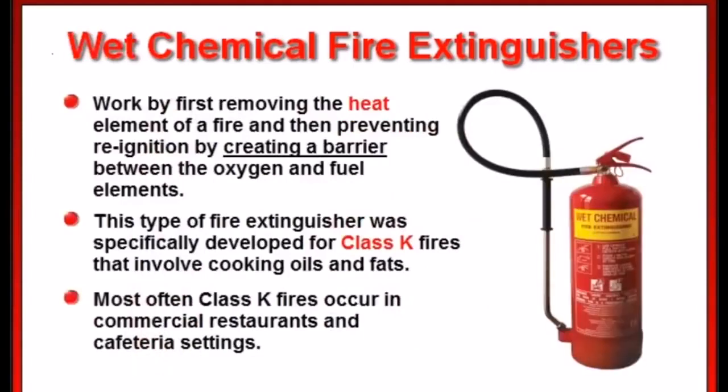Wet chemical fire extinguishers work by first removing the heat element of a fire and then preventing re-ignition by creating a barrier between the oxygen and fuel elements. This type of fire extinguisher was specifically developed for class K fires that involve cooking oils and fats. Most often, these class K fires occur in commercial restaurants and cafeteria settings.